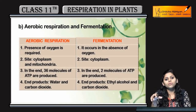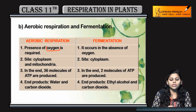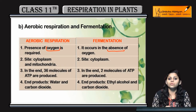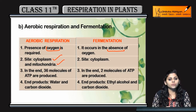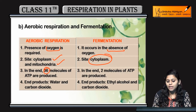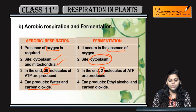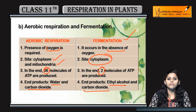Now the differences between aerobic respiration and fermentation: aerobic respiration requires oxygen, while fermentation occurs in the absence of oxygen. The site is cytoplasm and mitochondria for aerobic respiration, and only cytoplasm for fermentation. Aerobic respiration produces 36 ATP molecules and 2 molecules are produced in fermentation. End products are water and carbon dioxide in aerobic respiration, and ethyl alcohol and carbon dioxide in fermentation.